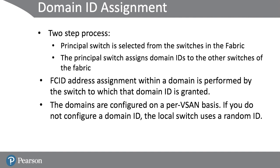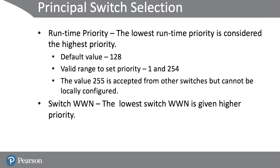The domain ID assignment is a two-step process. First, the principle switch is selected from the switches in the fabric. Second, the principle switch assigns the domain IDs to the other switches. The other switches do not automatically assign unique domain IDs for themselves — the unique domain ID is allocated by the principle switch. The FCID address assignment to devices is performed by the switch to which the domain ID is granted. The domains are configured on a per-vSAN basis.